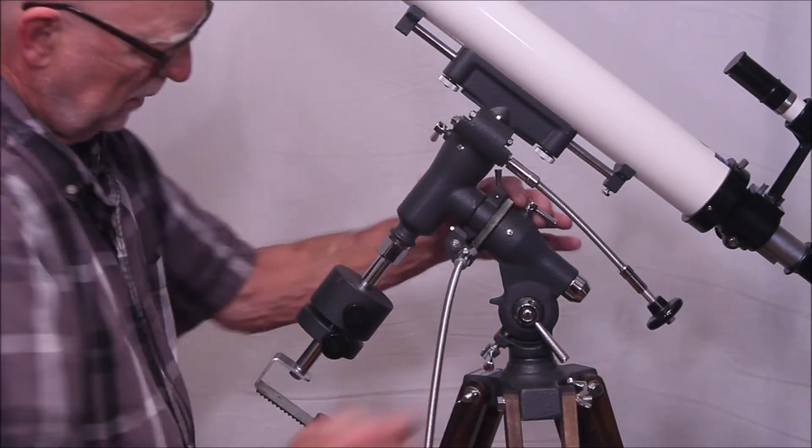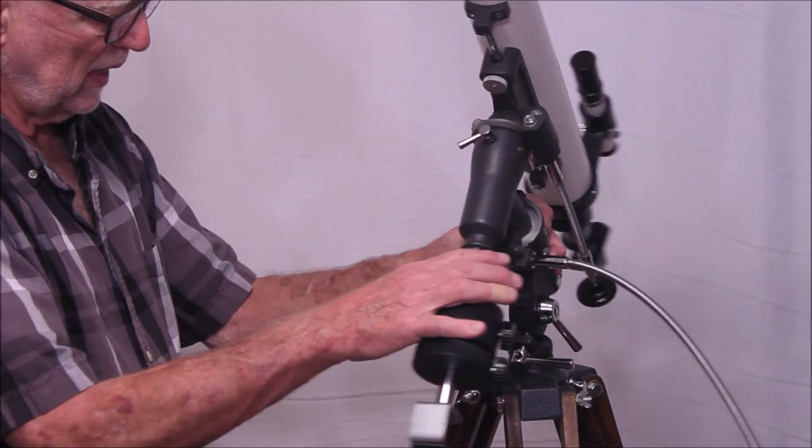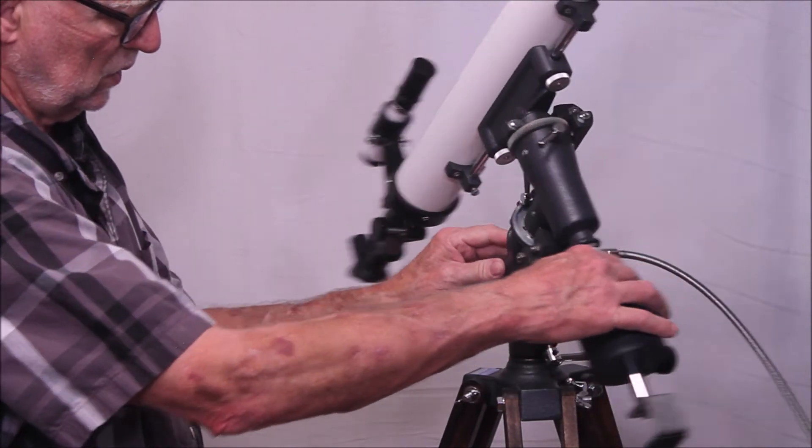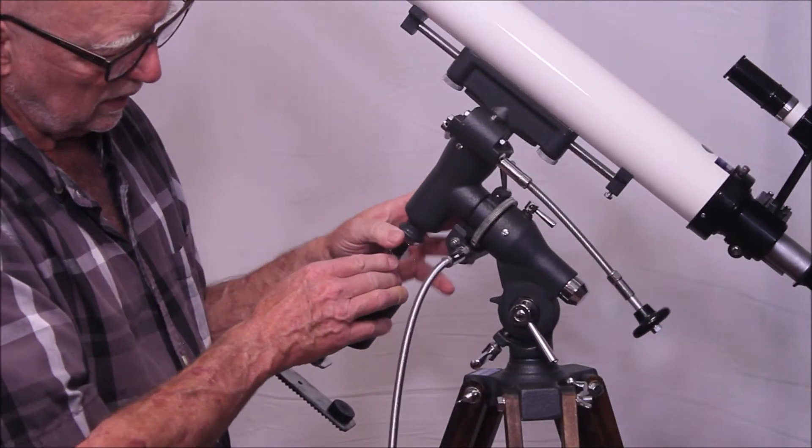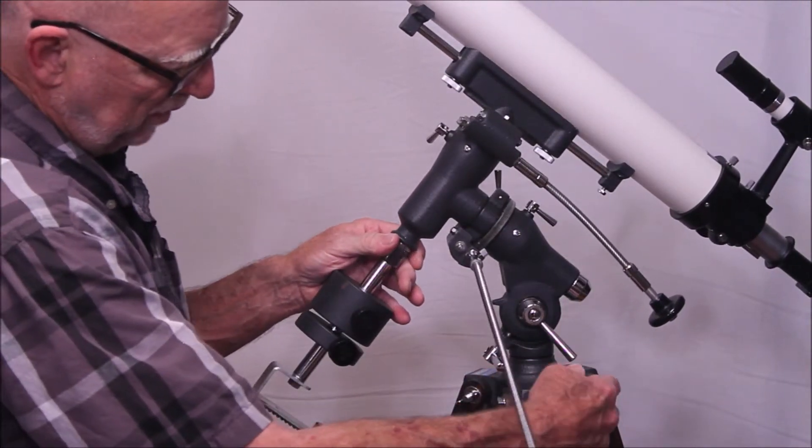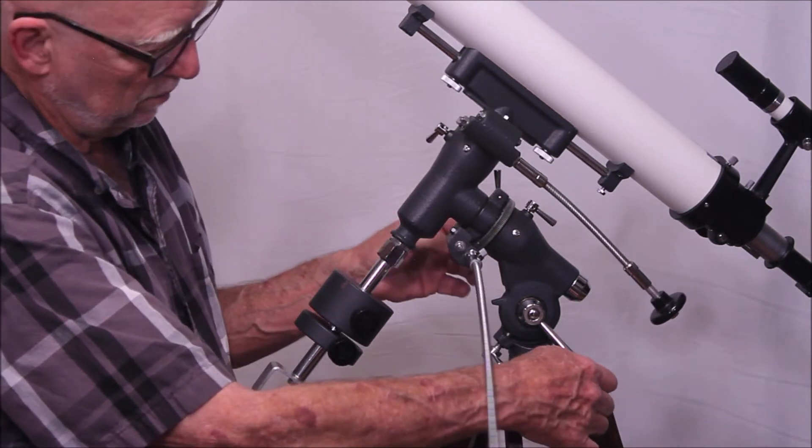You can also move this in azimuth like so very easily. So a polar alignment on this thing, although it wouldn't be real precise, would be pretty easy, pretty straightforward.